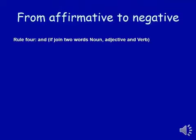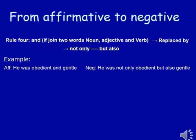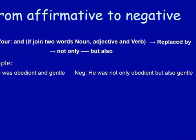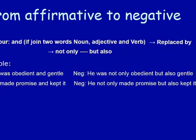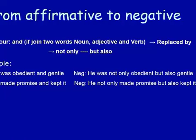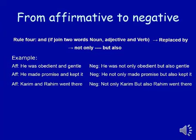Rule number four: when 'and' joins two words — nouns, adjectives, or verbs — replace it with 'not only...but also.' For example: 'He was obedient and gentle.' Here 'and' joins two adjectives. Before the first adjective, use 'not only,' and instead of 'and,' use 'but also.' Similarly: 'He made a promise and kept it' — 'and' joins two verbs. Before the first verb, use 'not only,' and instead of 'and,' use 'but also.' For nouns: 'Kareem and Rahim won their friend' becomes 'Not only Kareem but also Rahim won their friend.'